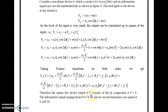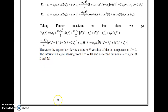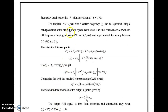The square law device output V0 consists of a DC component (at f = 0), the information signal ranging from 0 to W Hz, and harmonics — signals at fc and 2fc. The frequency band centered at fc has a deviation of ±W Hz, i.e., from fc − W to fc + W. So the required AM signal with carrier frequency fc can be separated using a band-pass filter at the output of the square law device.